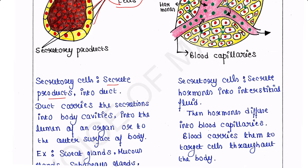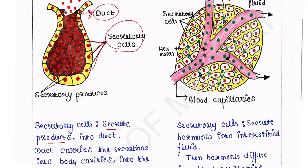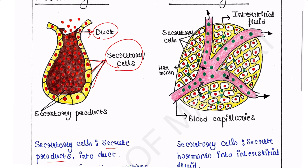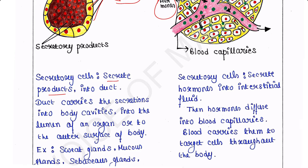Endocrine glands also have secretory cells; they secret hormones into interstitial fluid. Here we can see these are the secretory cells, and between these cells there is fluid called interstitial fluid. Interstitial fluid is basically found between different cells. The secretory cells secret hormones, so first these hormones are present in the interstitial fluid, then the hormones diffuse into blood capillaries.